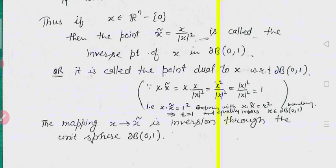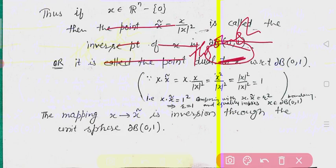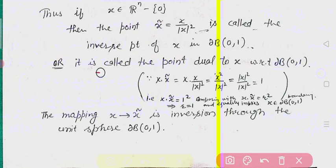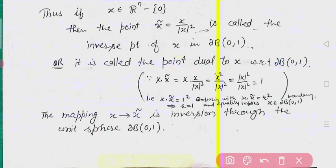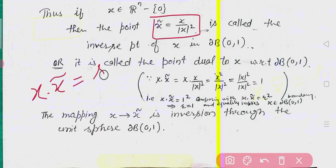This point x̃ is also called the point dual to x. That means x̃ is the inverse point of x, or you can say that x̃ is the dual to x with respect to the unit sphere. The condition for the inverse point is that x · x̃ should equal r² (radius squared).